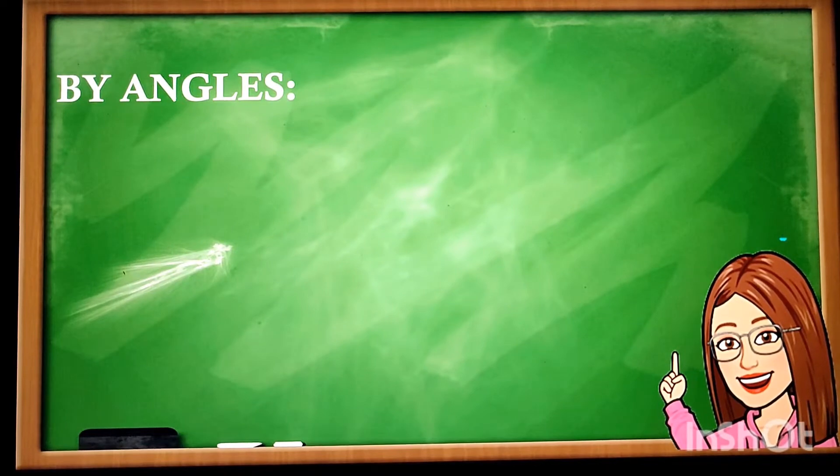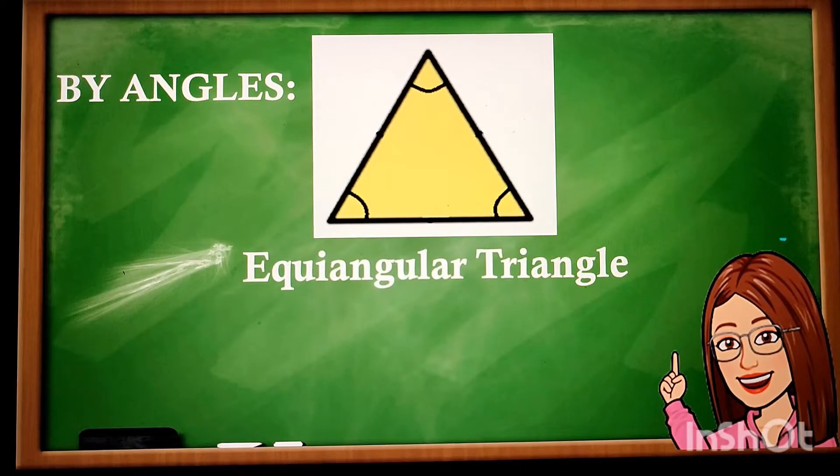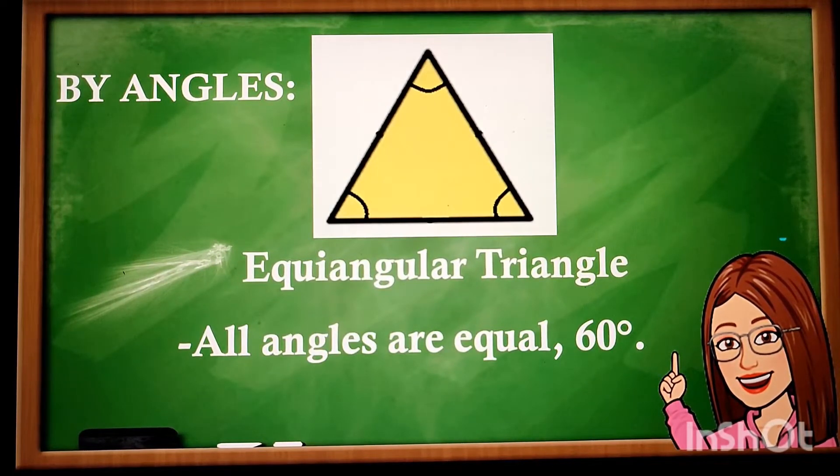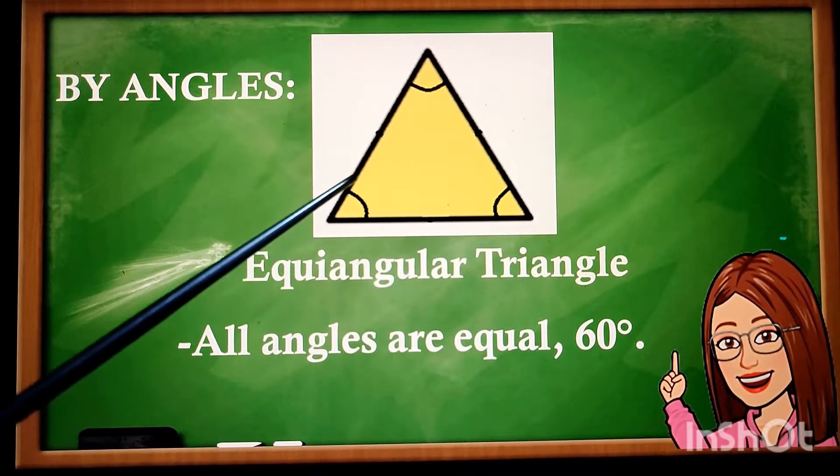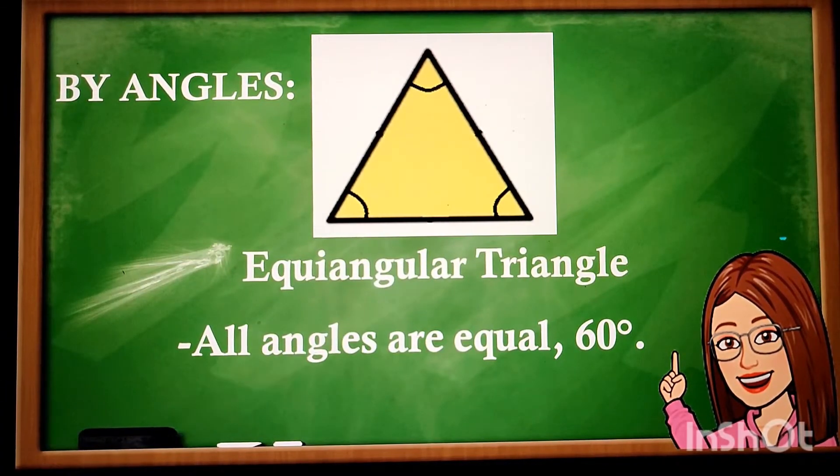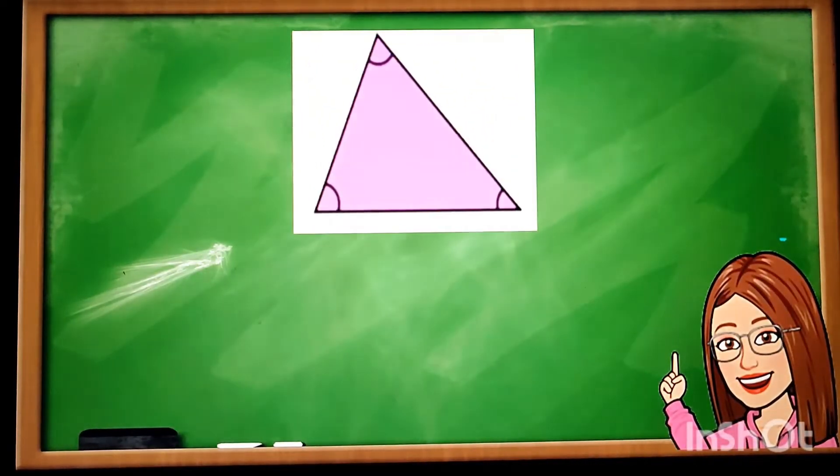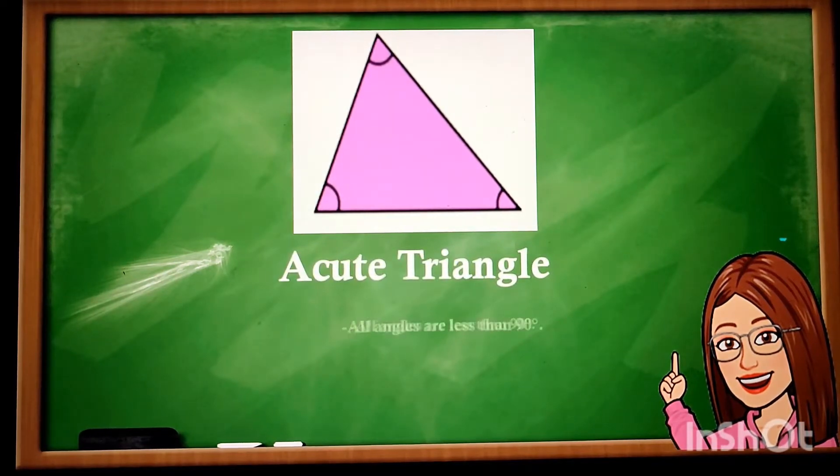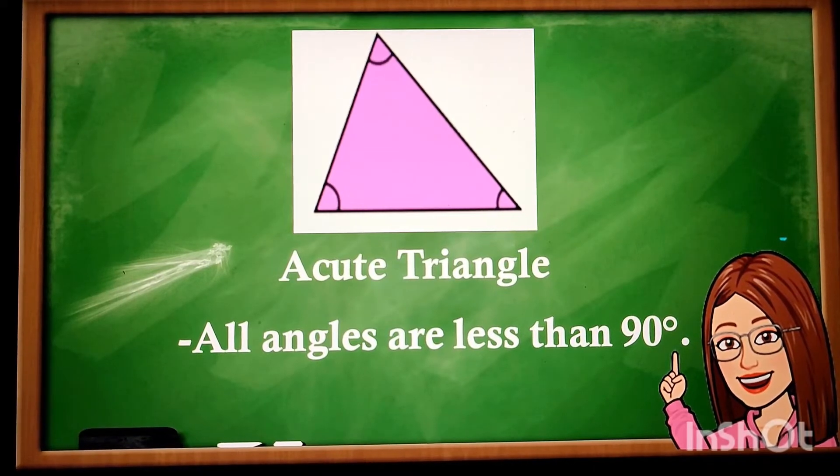How about triangles according to angles? We have here equiangular triangle. All angles are equal. It measures 60 degrees. 1, 2, 3. Three angles are the same. It measures 60 degrees. Next we have acute triangle. All angles are measured less than 90 degrees.